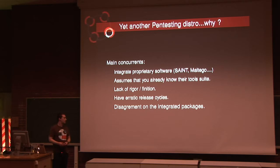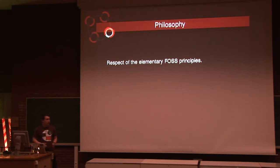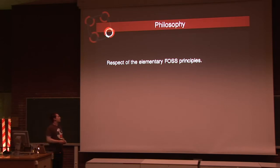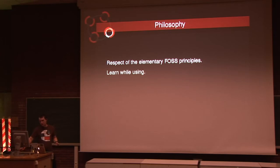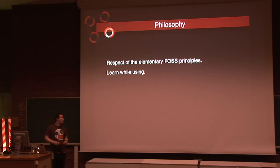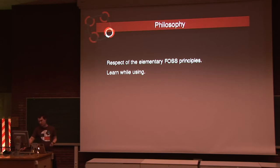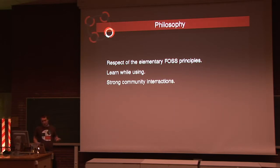Shadow Circle is currently in the same case regarding release cycles, but we really hope to fix things and make a regular release cycle. The philosophy of the project is the respect of the elementary free and open-source software principles: remove all proprietary software, learn while using, and integrate real help for users inside the distribution and online with a really comprehensive knowledge base and strong community interactions.